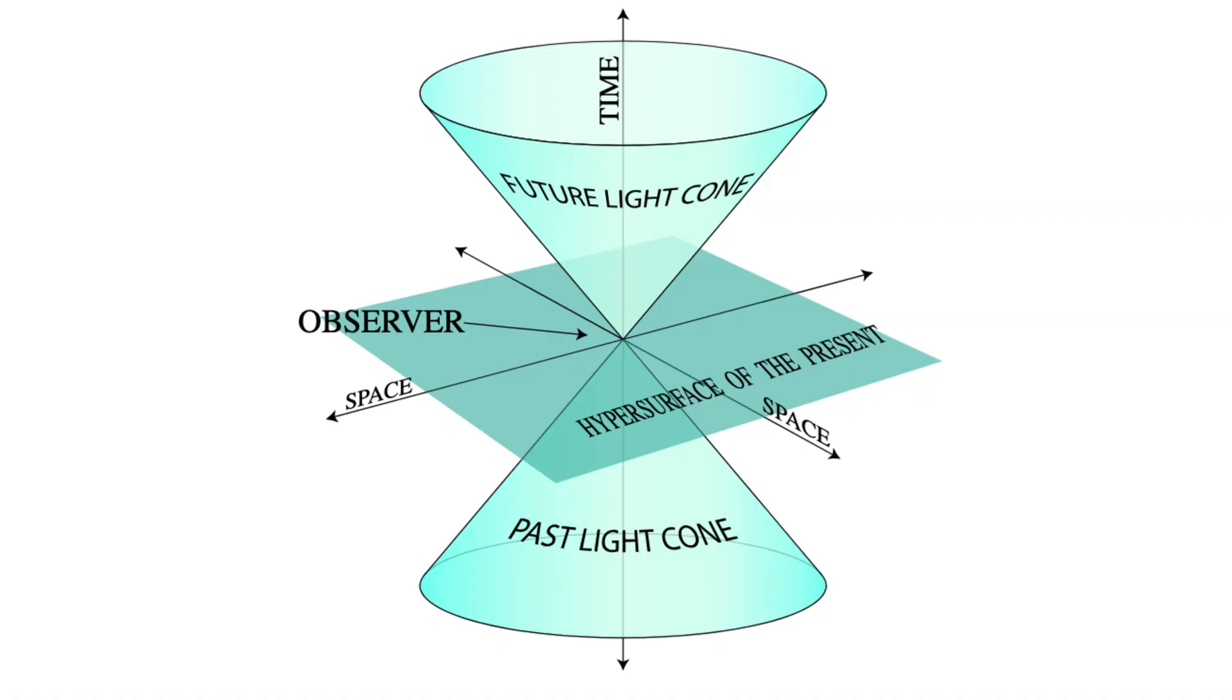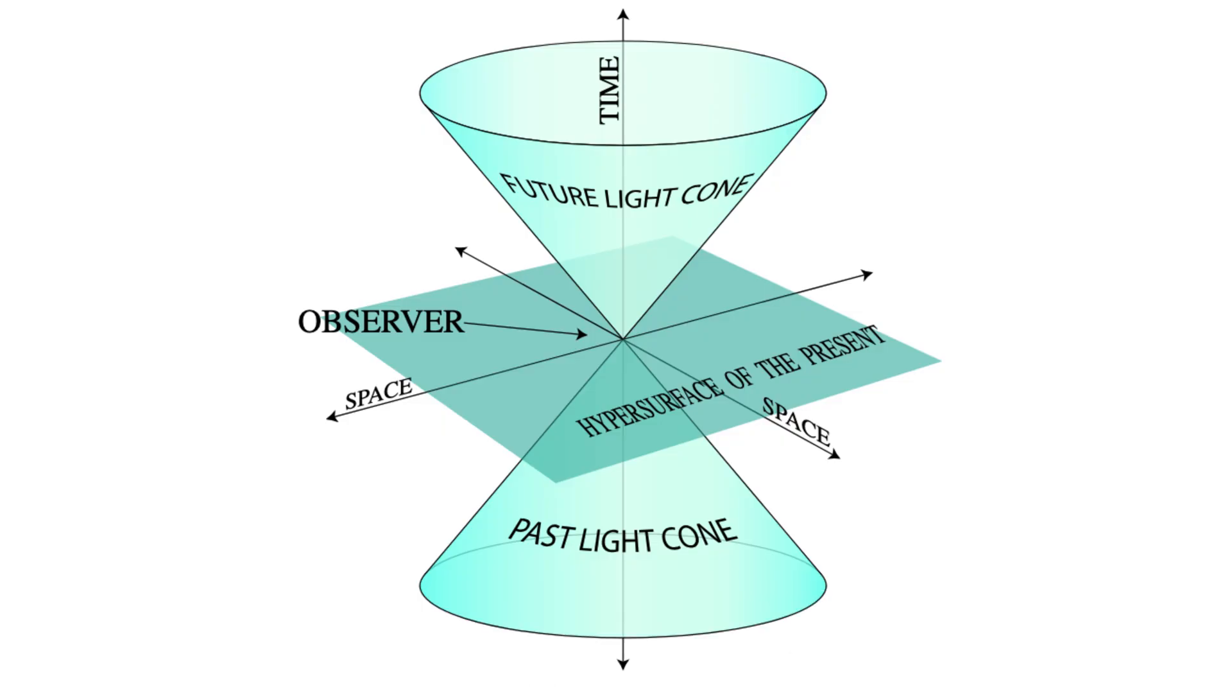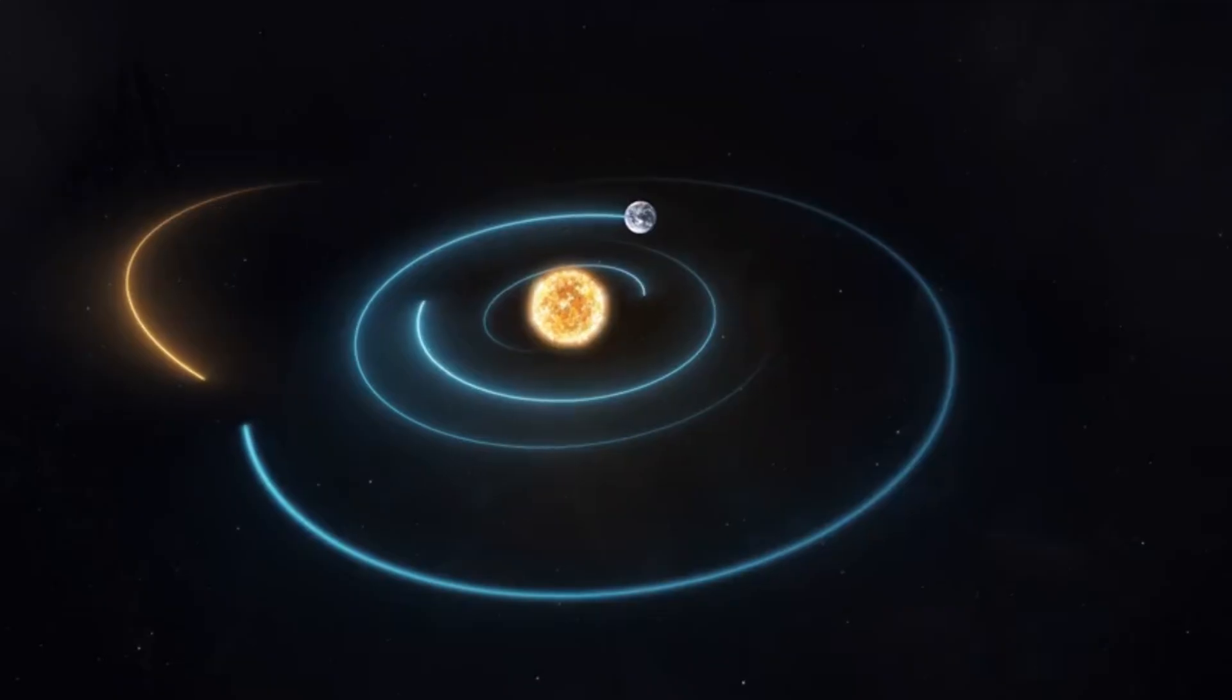In space-time diagrams, photons trace the mathematical boundary between events that can causally influence each other and those that cannot. This boundary defines the structure of causality itself.